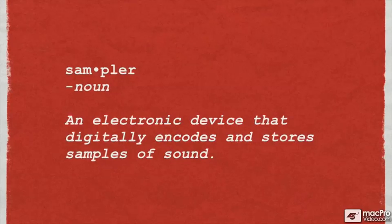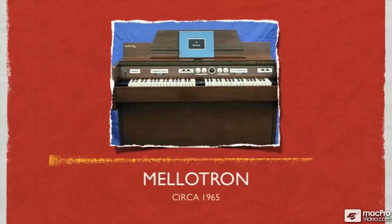One of the first samplers was the Mellotron. It would play back loops of pre-recorded sound. The loop could play for about 7 seconds, and then it would rewind to the beginning and start over again. The Mellotron was heavy and would easily go out of tune — the tape loops would wow and flutter — but none of these problems kept it from being a staple of late 60s rock.